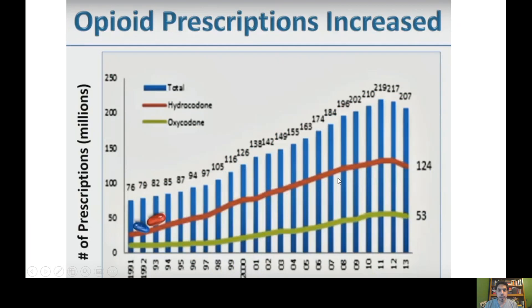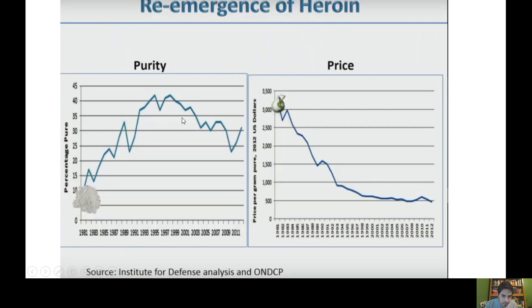We see a market increase in opioids here. Hydrocodone and oxycodone — ingredients in Oxycontin, Percocet, and other opioids — show a dramatic increase in prescriptions. So doctors were also duped by this, and it's hard for a lot of people to see the role doctors play in this crisis because many people have a kind of mythical deference to doctors' judgment.